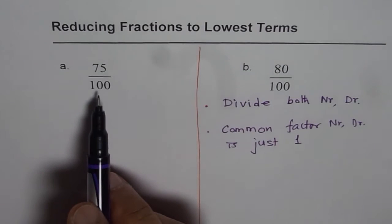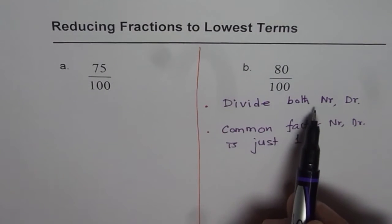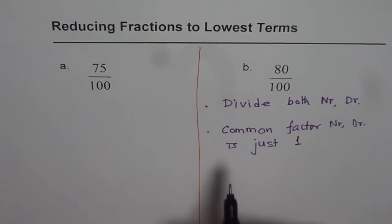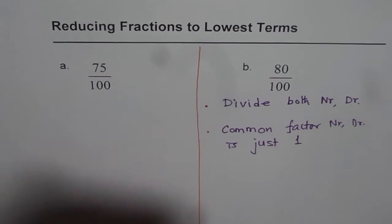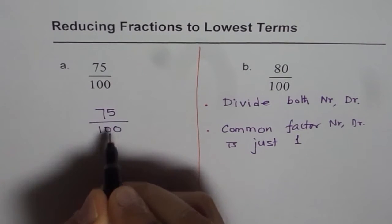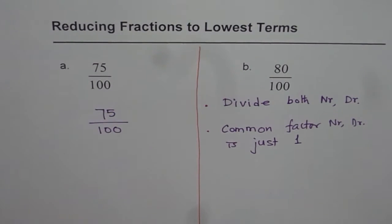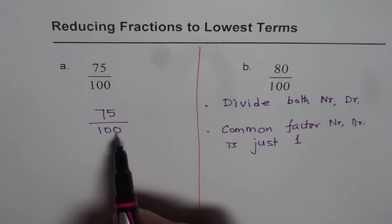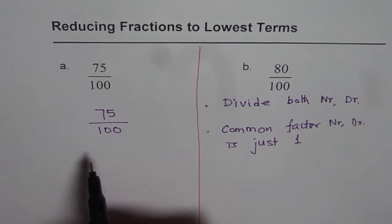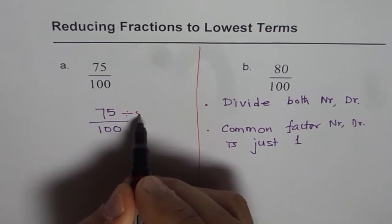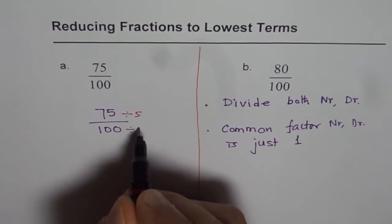Now, 75 over 100. Divide both sides by the same number and keep on doing it till there is no common factor. So, let's do this way. We have 75 over 100. Some of you may need a calculator. Both end with 5 and 0. That means you can divide them both by 5. So, 75 you can divide by 5 and 100 also you can divide by 5.